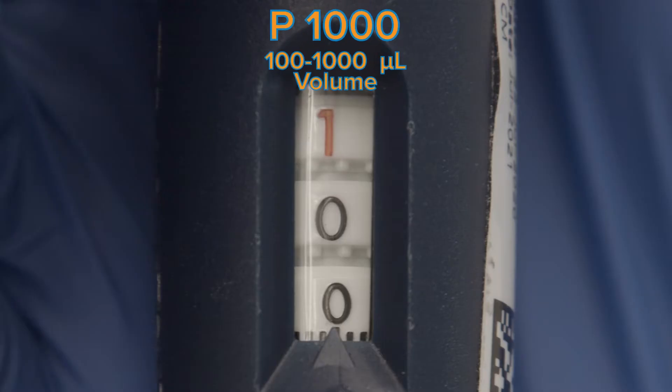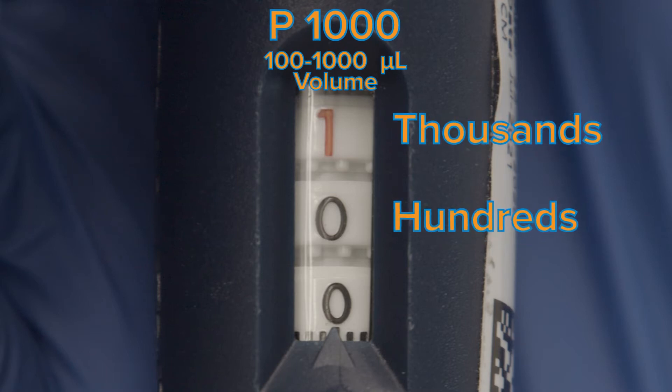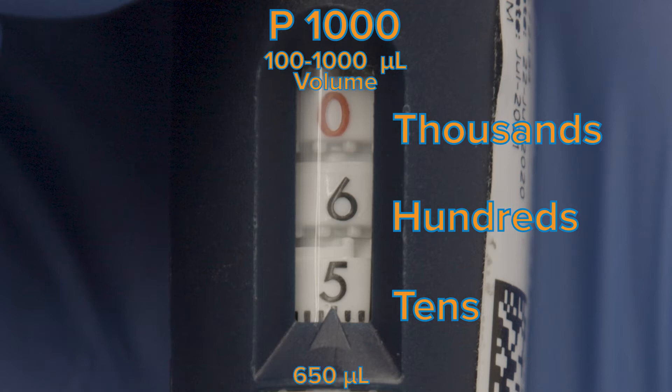For a P1000 pipette, the first red digit is thousands of microliters, the middle is hundreds, and the third is tens. So this is 1000 microliters, while this would be 650 microliters.